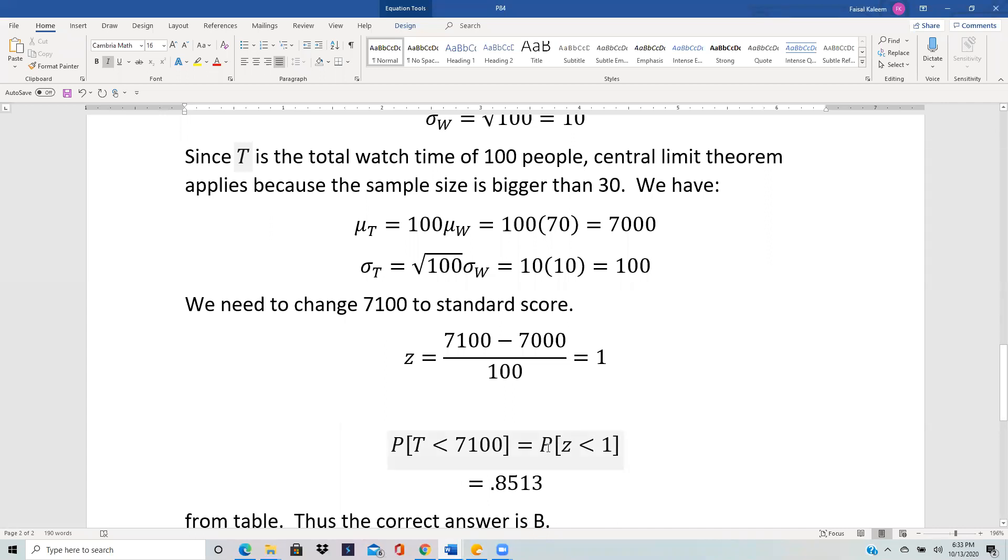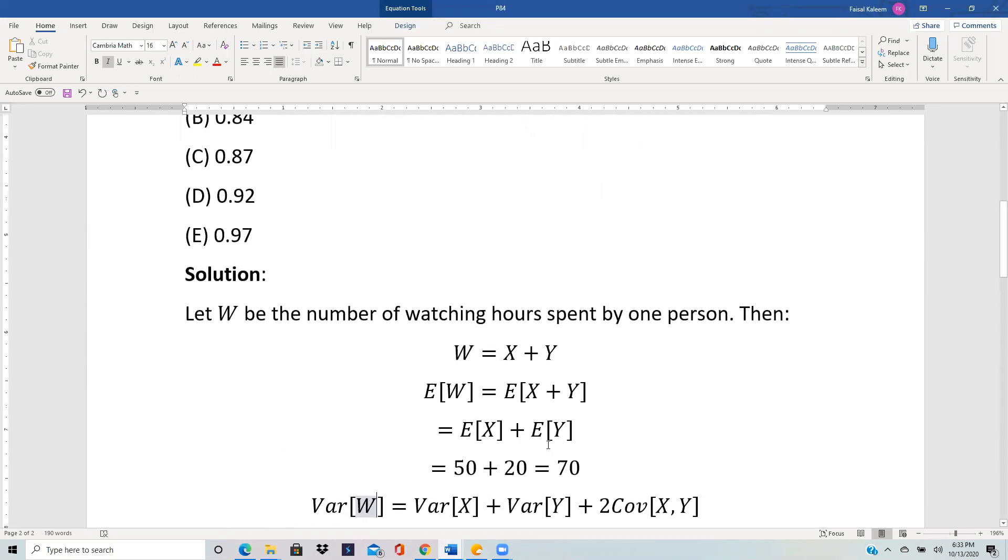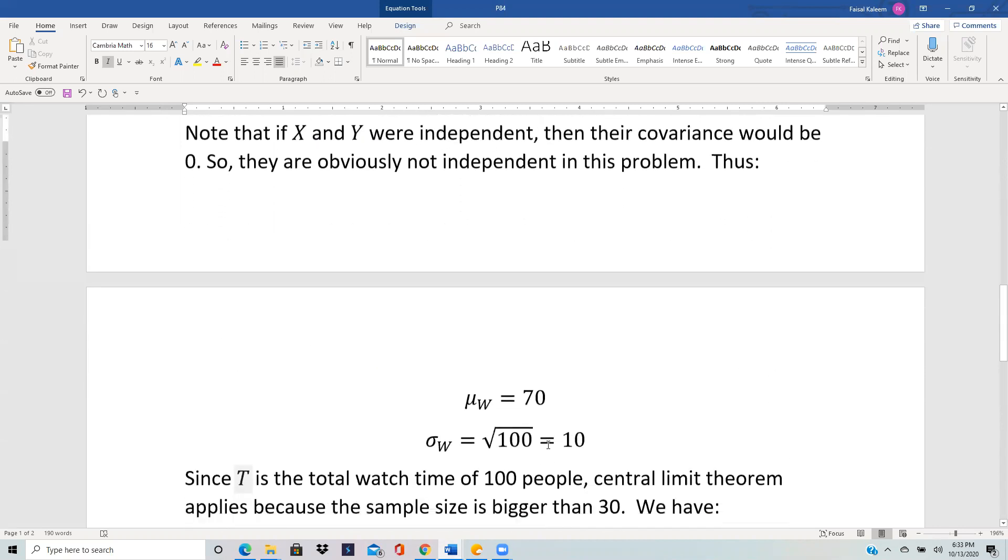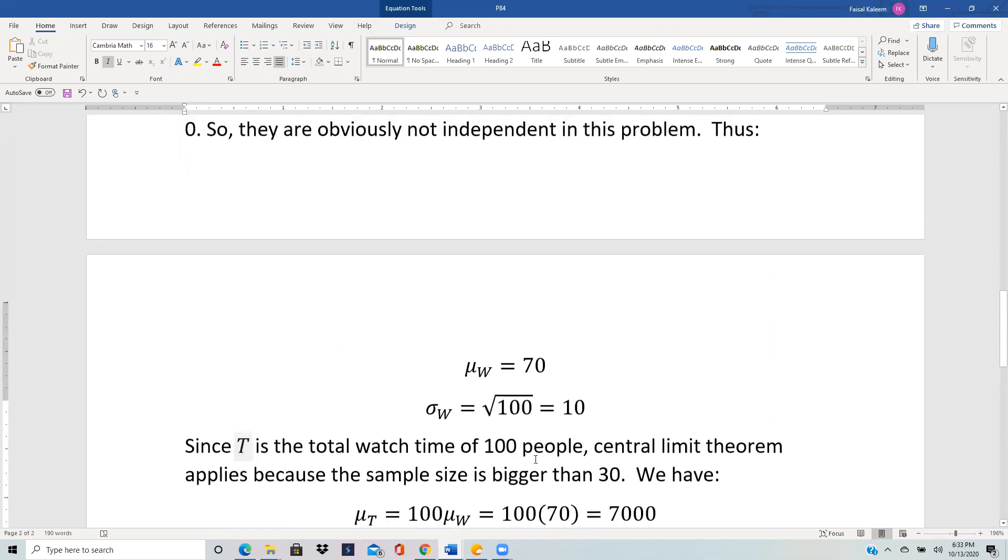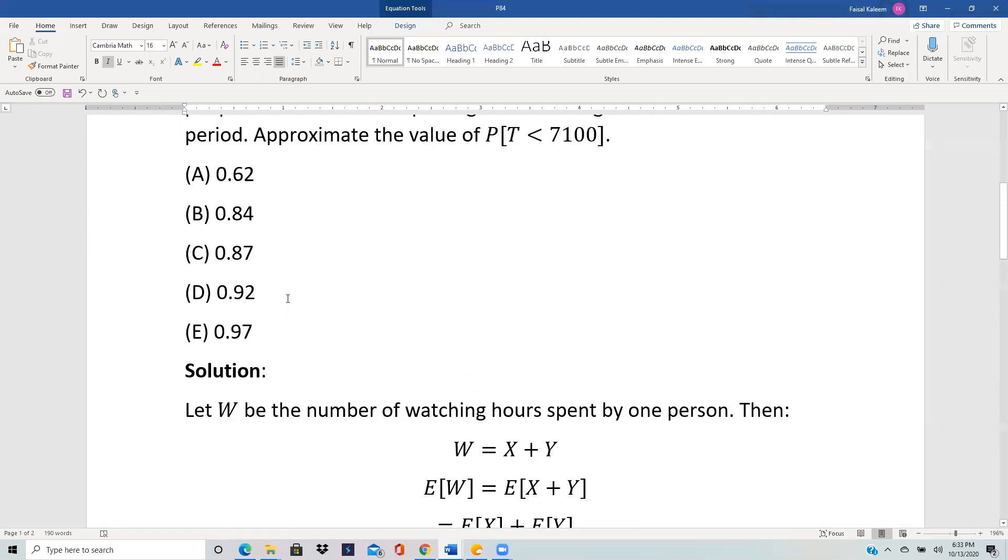0.85. Okay, it was 0.8413 from the table, not 0.8513, and so that is choice B.